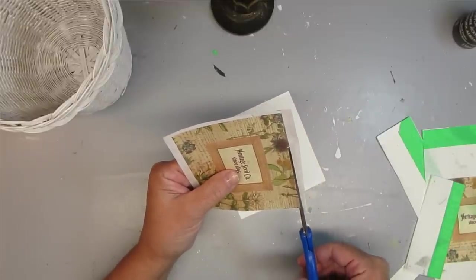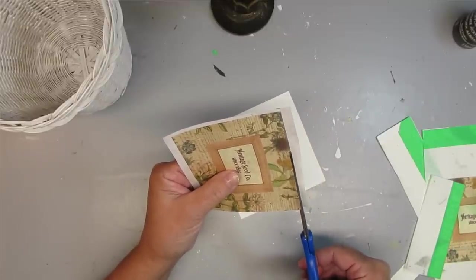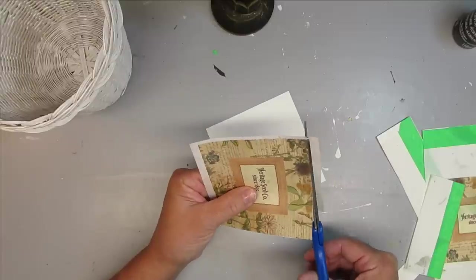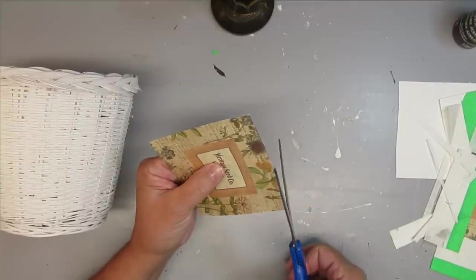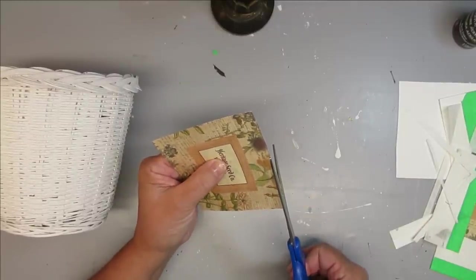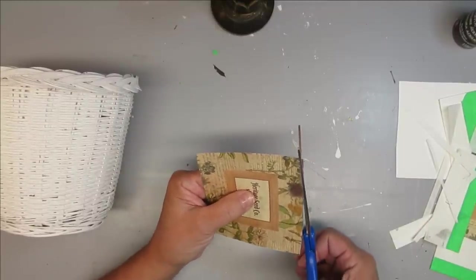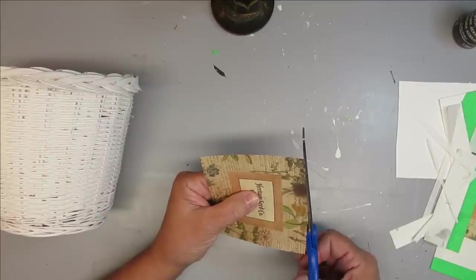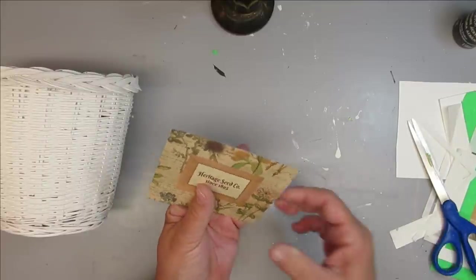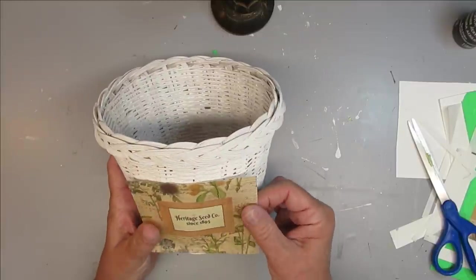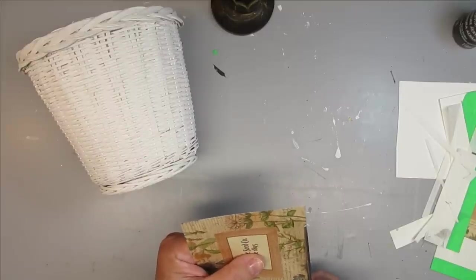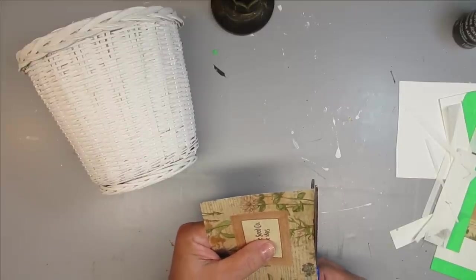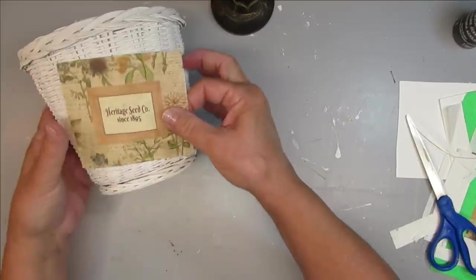When you're putting square pieces of paper or tissue or whatever it may be onto something that is round you need to adjust for that. So at the top I'm going to just trim the edges a little bit rounded sort of rounded down and then for the bottom I'm going to be rounding that in the center a little bit. It's hard to explain but when you take a look at it this way on the basket you can see where you need to adjust it.